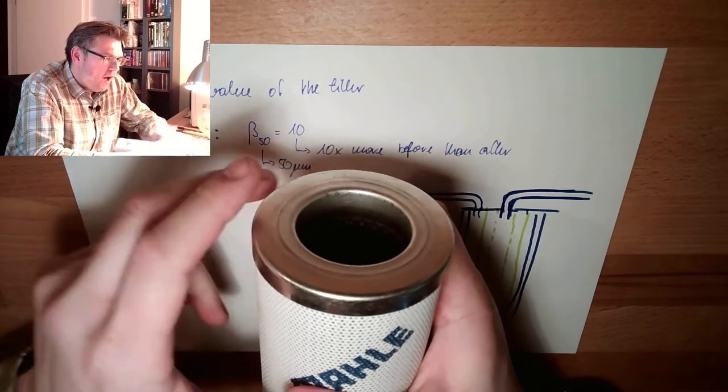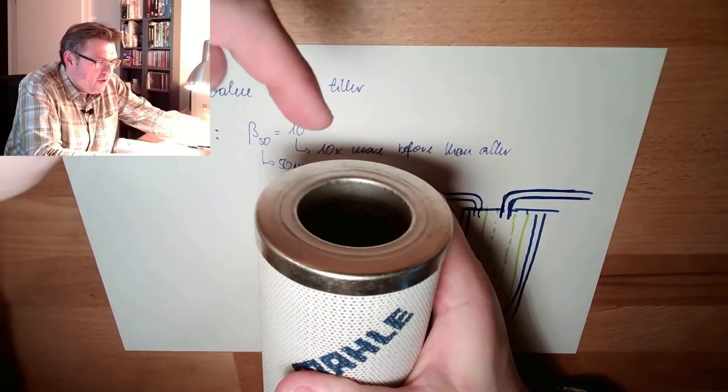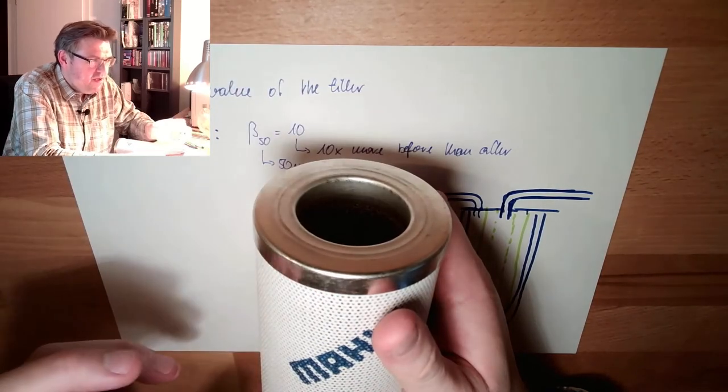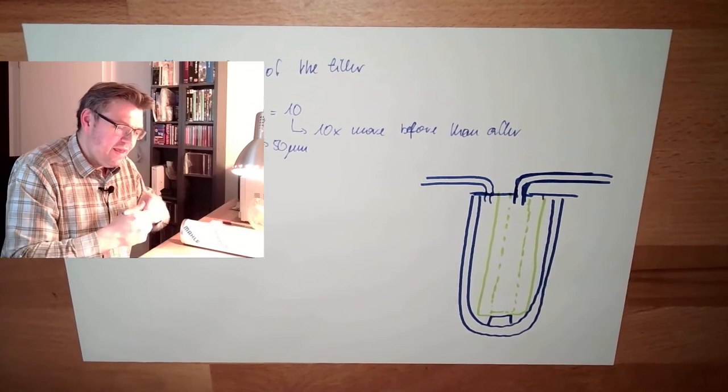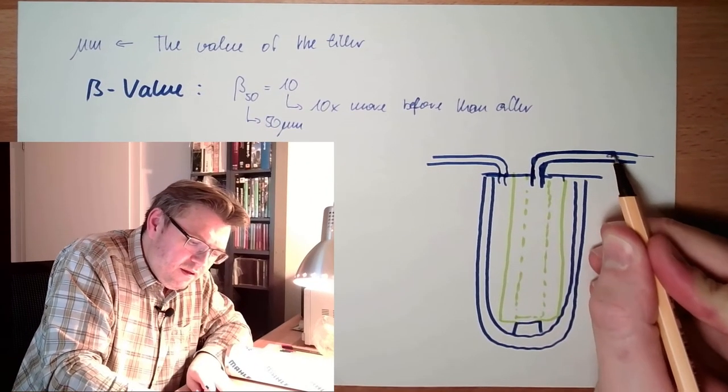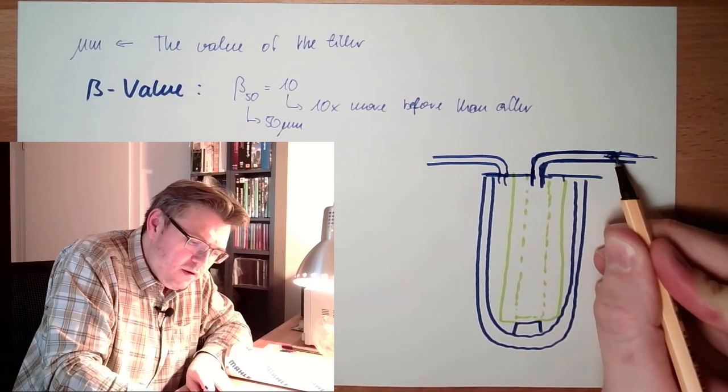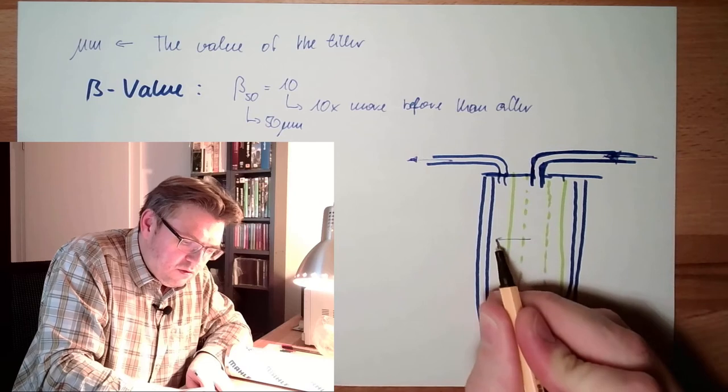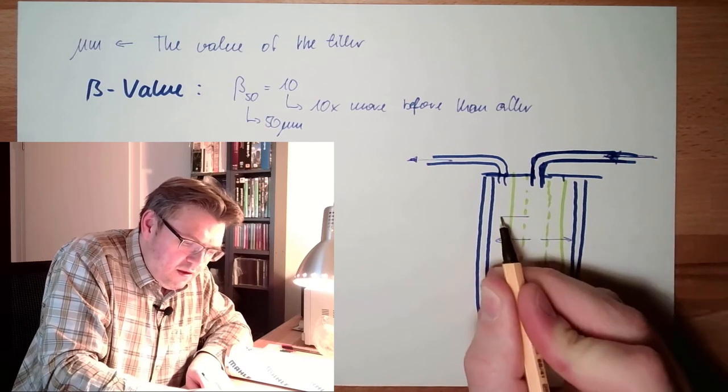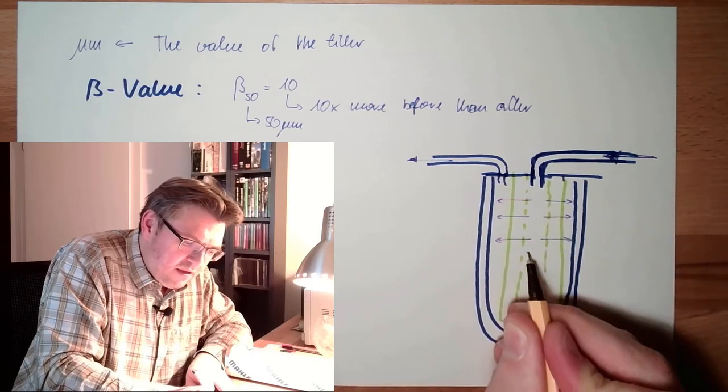Our oil which will be filtered will go here and leave here. We go in at the inner part of the filter and out at the outer part. The filter will be streamed from inside to the outside.